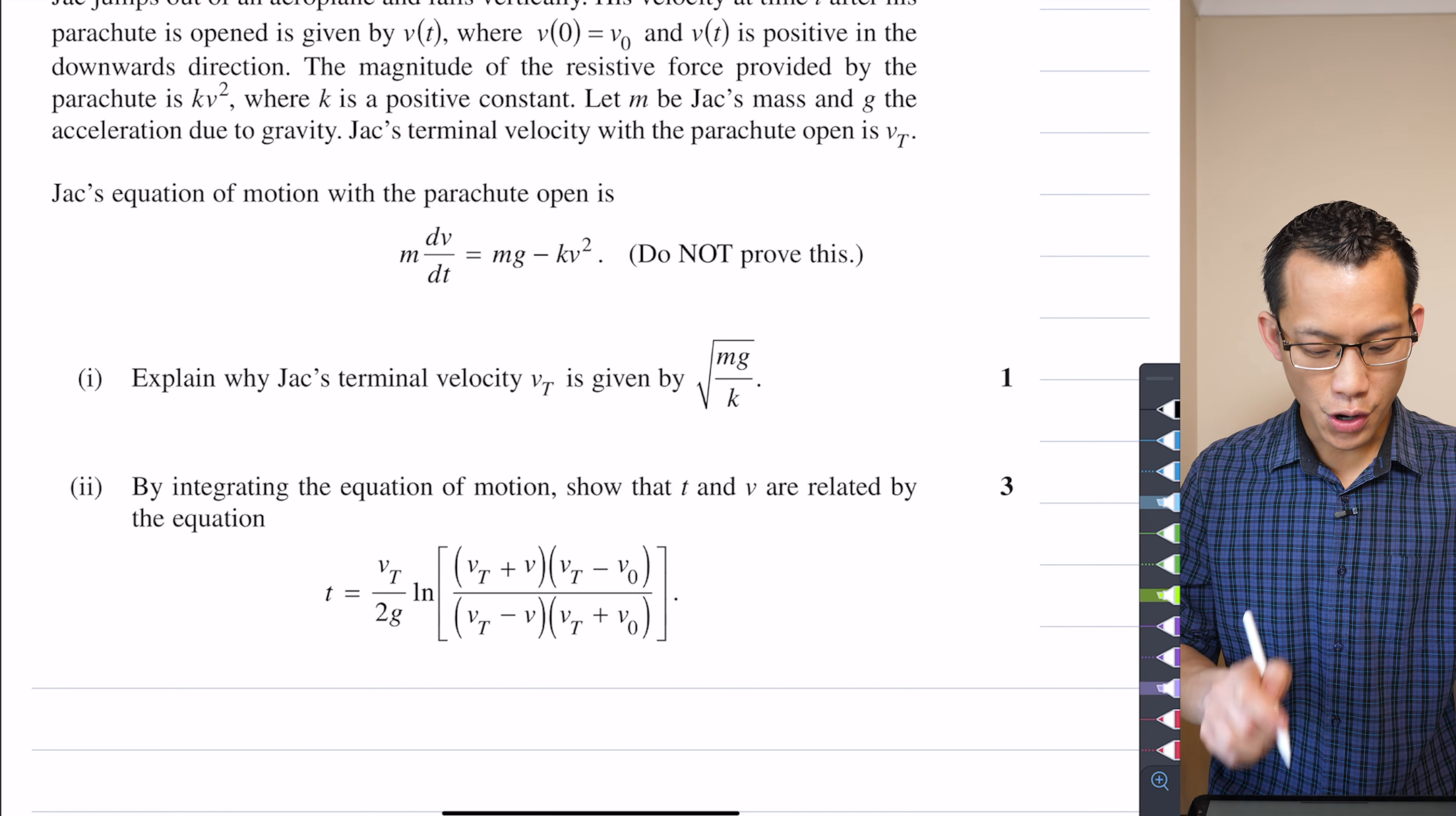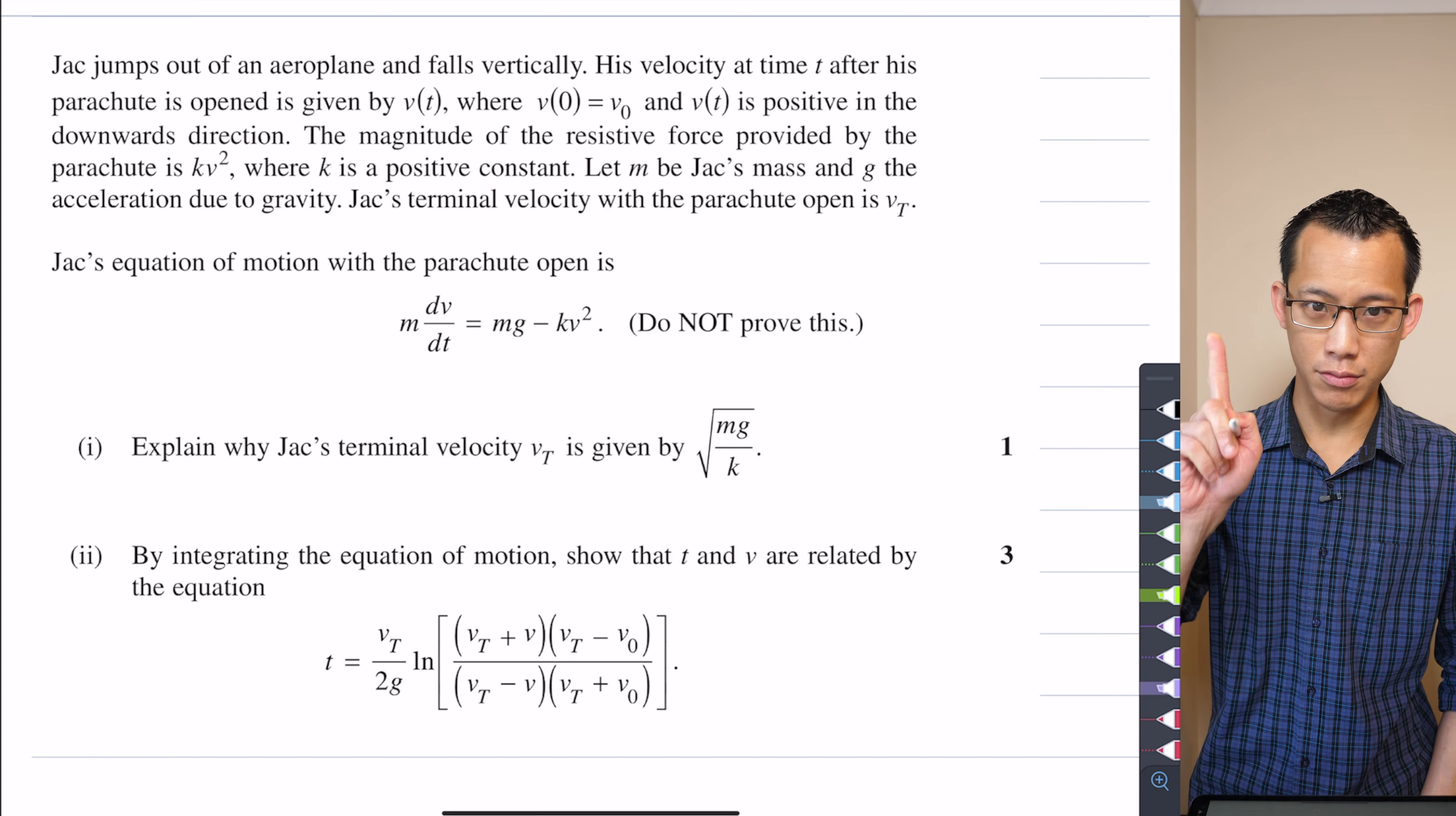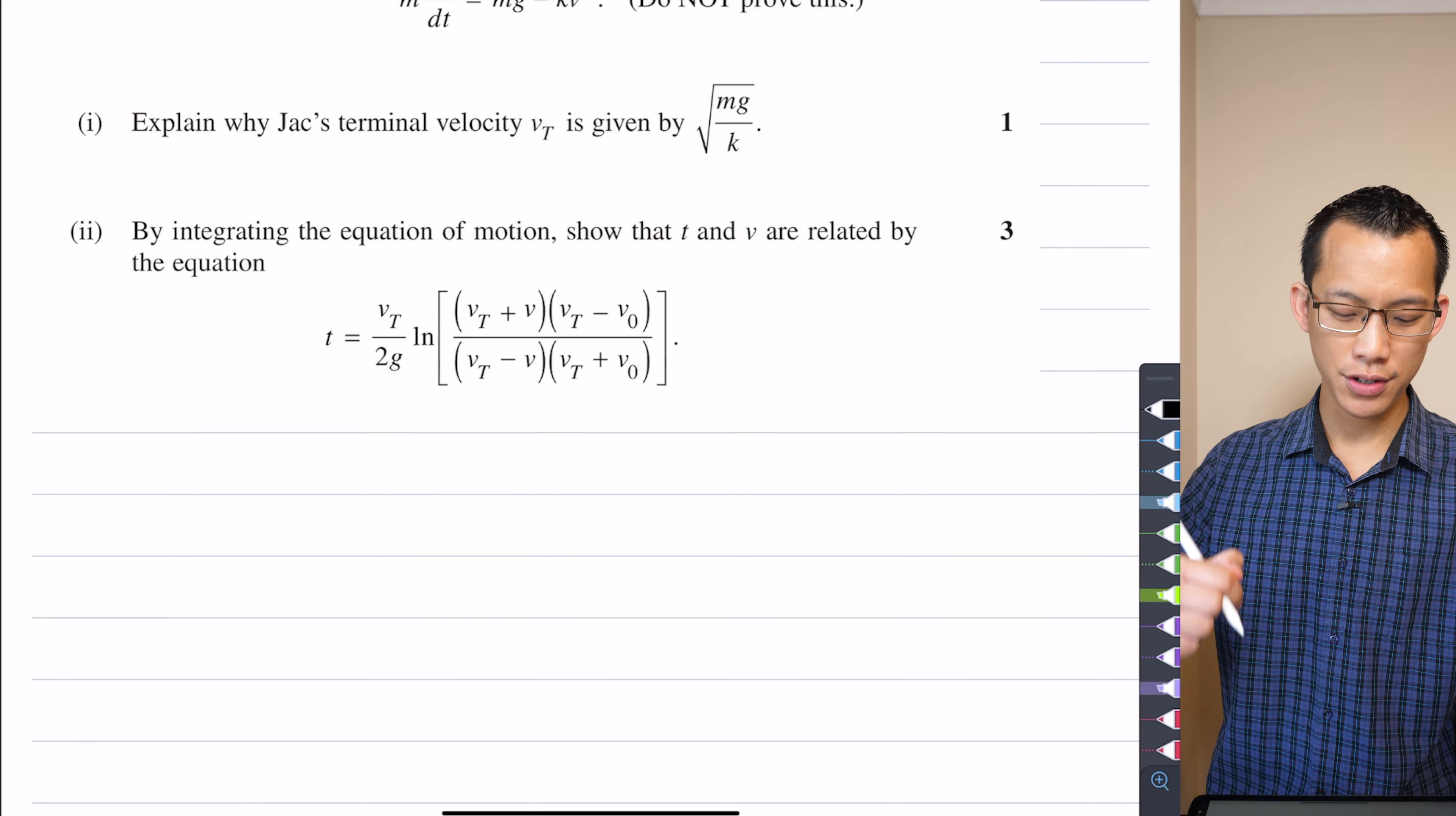And so that's why gravity is positive. And this resistive force is negative, which is going up. Explain why Jack's terminal velocity VT is given by square root of mg on K. Now, do be careful. Usually when you see an explain question, it is almost a guarantee that you have to use some kind of verbal argument.